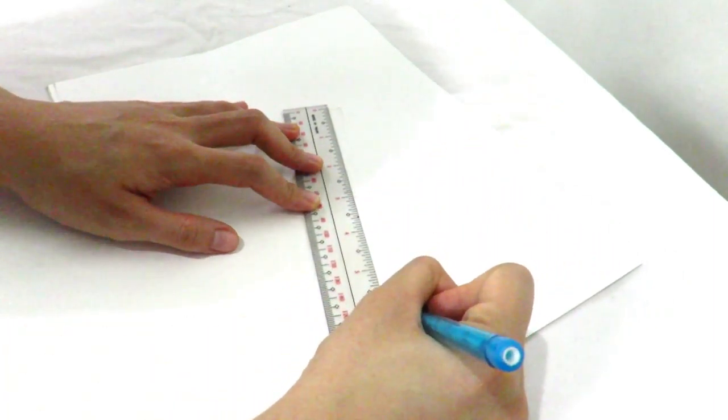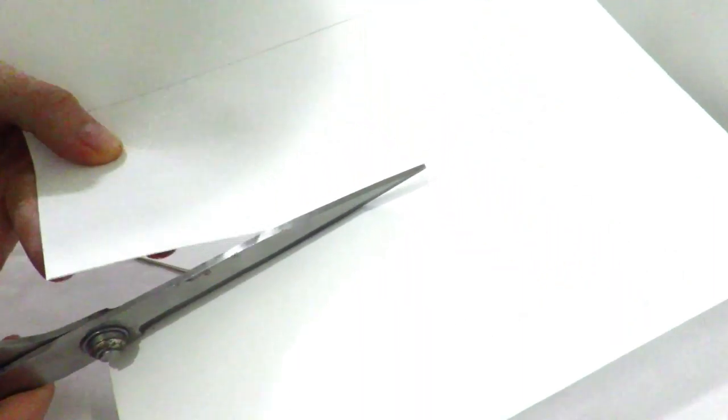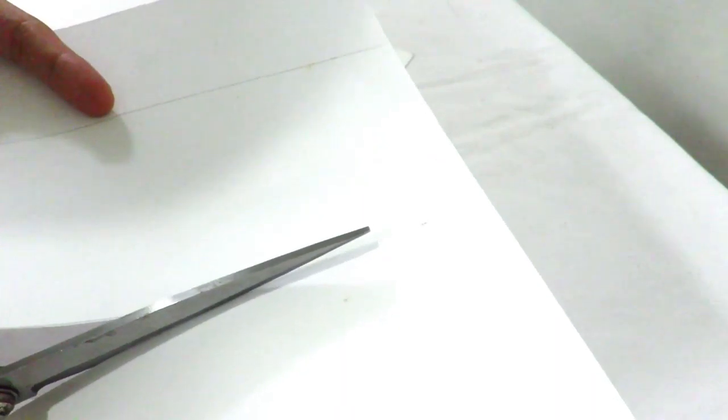First, take your thick white papers and measure out 3-inch strips. Cut them out and make as many strips as you need for your cash envelope.